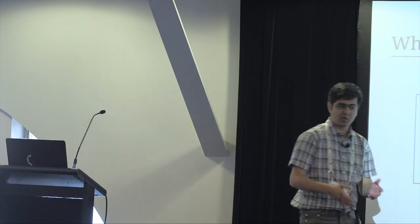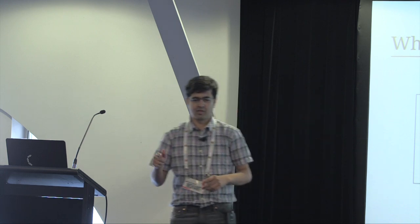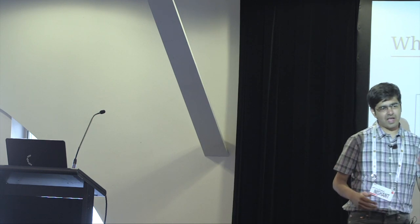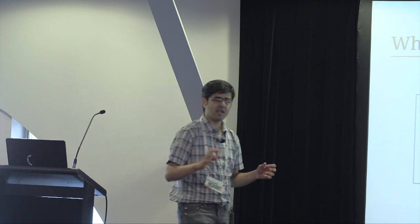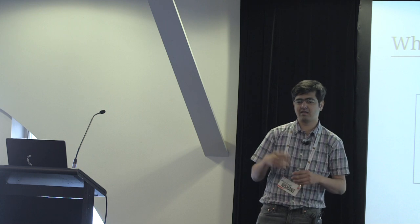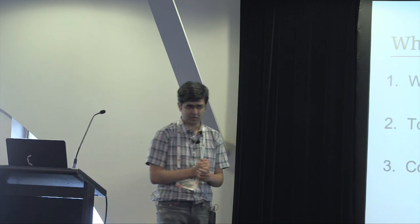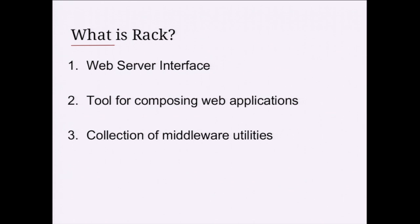When a web server typically gets a request, it converts the request data into an object representation and hands it over to the application or framework which can then act upon it. Back in the day there was no standardized way to do this conversion, so as a framework developer if you had to support a specific server you had to write specific handlers for it. Rack came along and solved just this problem — it provided a standardized API or interface for frameworks and servers to talk to each other.